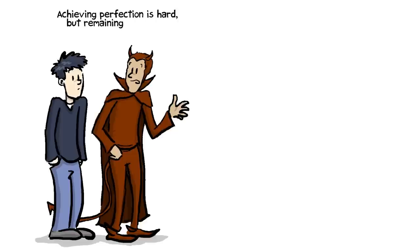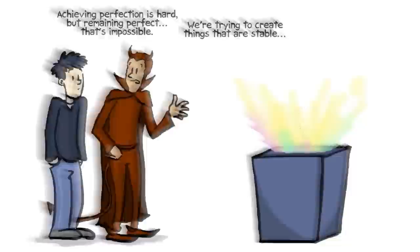It's one of these things, I don't know if it was Faust that said it, that achieving perfection is hard, but remaining perfect, that's impossible. A lot of what we're trying to do also creates things that are stable. Because you can have the most exotic quantum state, but unless you can probe it, measure it, evolve it in some way that you want, steer it, it's going to be useless.